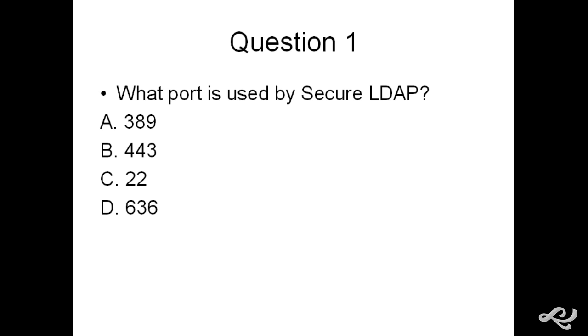The correct answer might jump out at you, but you still want to look at every possible answer. You want to know which one is correct and which ones are incorrect and why. So let's look at each one. Answer A says 389. I'm fairly sure that's the port for standard LDAP or unsecure LDAP. Port 443, I remember that is HTTPS. Port 22, I believe that's secure shell. So it looks to me that 636 would be the answer. And I remember that 636 sounds like secure LDAP to me. And if we look here, answer is indeed D, 636.